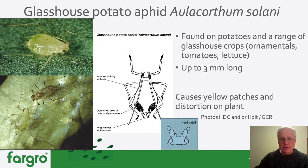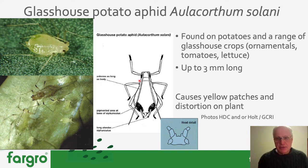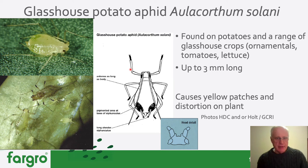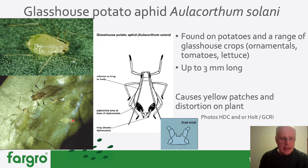This species is polyphagous — it will be found on quite a range of glasshouse crops and ornamentals. The glasshouse potato aphid is found on a range of glasshouse crops, ornamentals, tomatoes, and lettuce. This one has a very obvious identification feature: a darkened area at the base of the siphunculae, shown both in the image and in a real-life example here. It's a very large aphid species, up to three millimetres long, and at low density will cause yellow patches and distortion on the plant due to toxic saliva. We can see head detail, and in the image below there is a winged form, a non-winged form, and some less mature forms of the aphid.